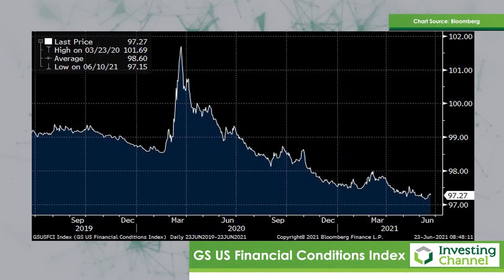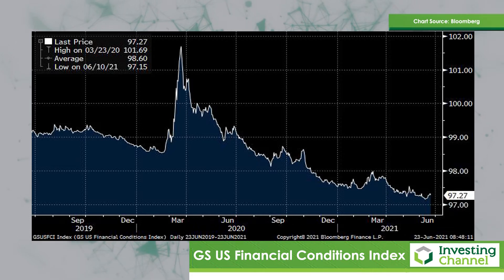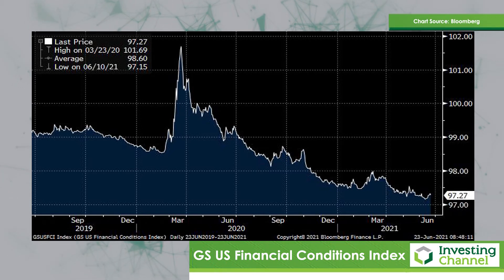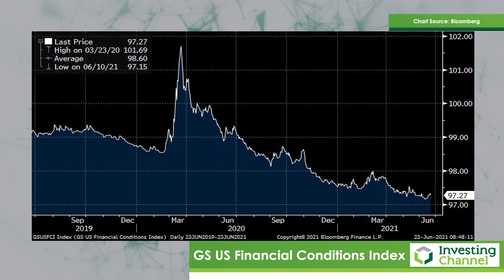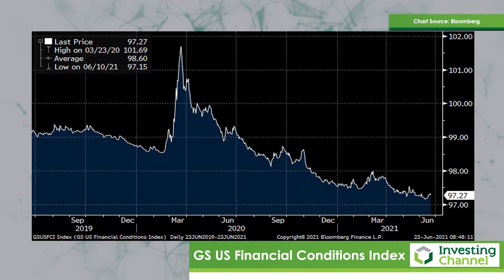Let's start off with the key point in all of this. We start off with the Goldman Sachs U.S. Financial Conditions Index. As one can see, we are still very much at the loosest conditions in financial market terms that we have been. That's important because that is what drives risk appetite, and as long as those conditions hold — volatility is low, interest rates remain low — the risk appetite is going to be there.